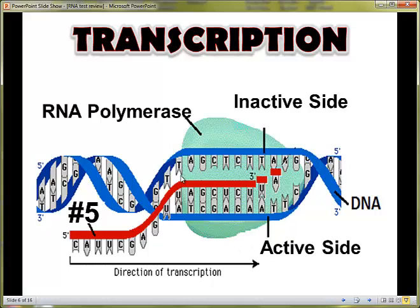As you can see, RNA polymerase is attaching these RNA nucleotides to the active side only of the DNA. The DNA template is truly the active side, and because of this, the RNA's nucleotides will be assembled in a very specific order based on this DNA code.